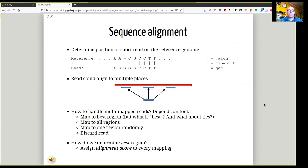So when we get reads, they could align to multiple places. That's called multi-mapping and how do we handle it depending on the tool? Either you could map to the best region, but what is best and what happens if there's a tie? Or you could try and map the same read to multiple regions, or you could map to one of the regions randomly, or you could discard the read.